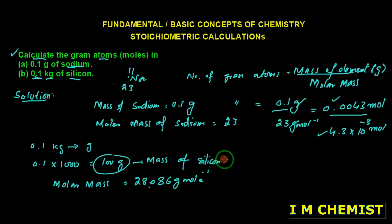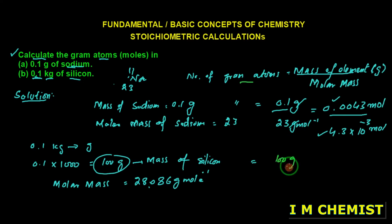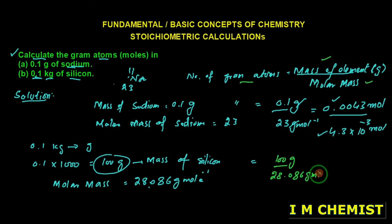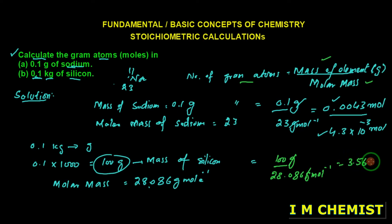Putting this into the formula, just like we did for sodium: number of gram atoms equals mass in grams, which is 100 grams, divided by molar mass 28.086 grams per mole. The gram units cancel out and we get 3.56 moles. Hence, this is the answer. Thanks for watching.